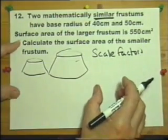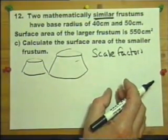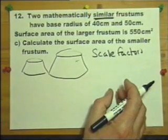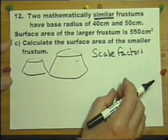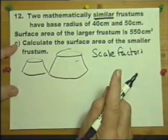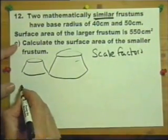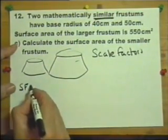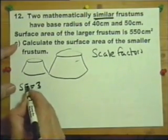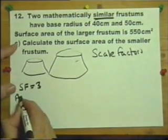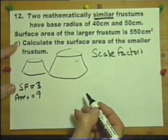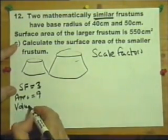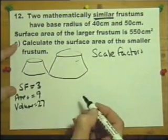A shape enlarged by scale factor 2 will have all sides twice as long. An enlargement by scale factor 3 means all sides are three times as long. Let's write that down: if the scale factor was three, then any area would be nine times bigger, and any volume would be 27 times bigger.